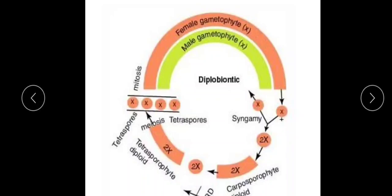The zygote is short-lived and it divides mitotically to form a branching, filamentous structure called the carposporophyte — the same structure we studied in the haplobiontic life cycle. However, in this case the carposporophyte is diploid, whereas in the previous case it was haploid. This carposporophyte is a branching filamentous structure that remains attached to the gametophyte — it is not independent.